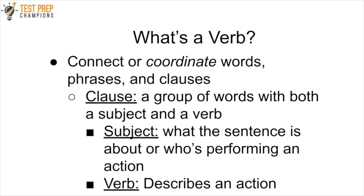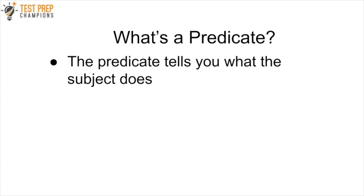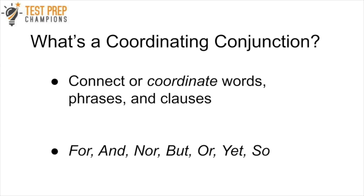Another important word to know here is a verb. A verb, to put it simply, describes an action. If you want to learn more about verbs, check out my other video on GED grammar down below. One more thing you should know is what is a predicate? The predicate tells you what the subject does in the sentence. So coordinate conjunctions connect or coordinate words, phrases, and clauses.